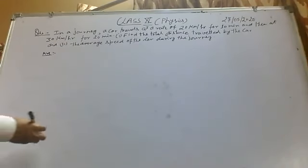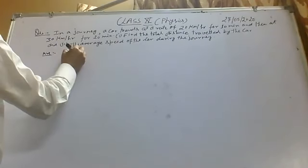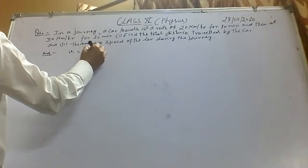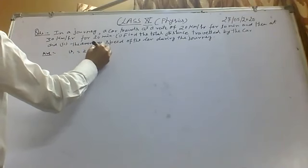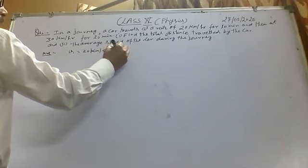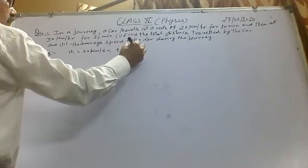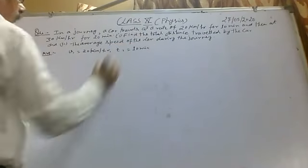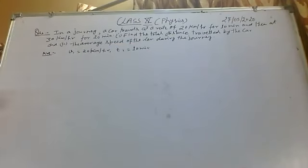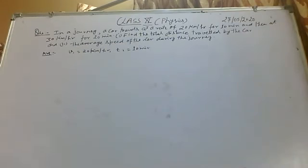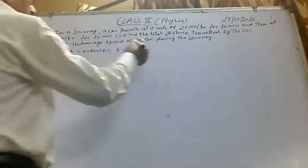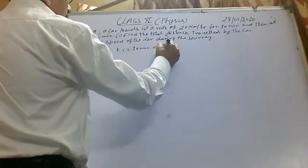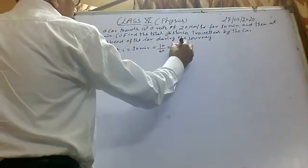So here, V1 is given as 20 km per hour and T1 is given as 10 minutes. Since the speed is given in km per hour, we can change the time into hours. So 10 over 60 means 1 by 6 hours.